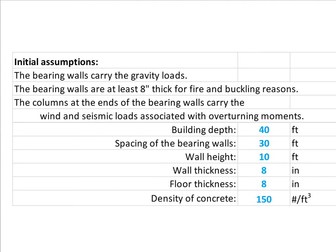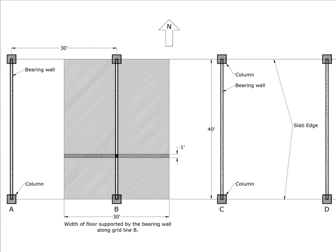The assumptions we've made so far: the building depth from one major facade to the other is 40 feet, the spacing of the bearing walls is 30 feet, the wall height is 10 feet, the wall thickness is a minimum of 8 inches, the floor thickness is 8 inches, and the density of the concrete is 150 pounds per cubic foot, which accounts for some steel reinforcing and dense aggregate. This is the floor plan.